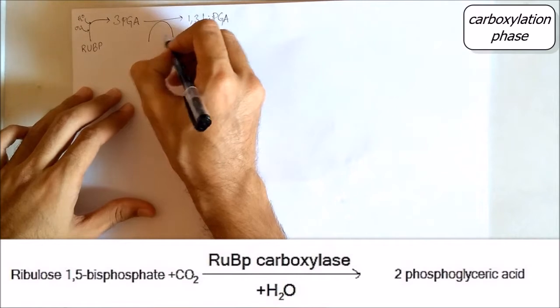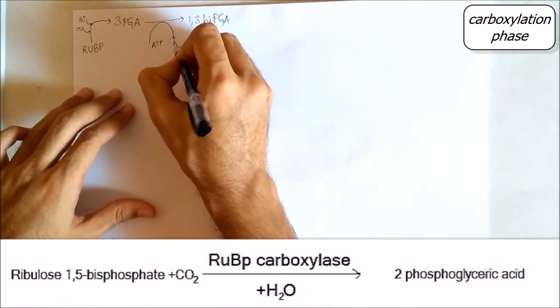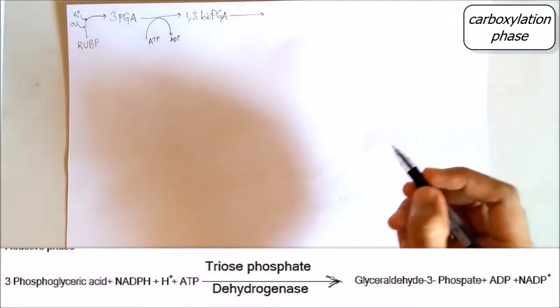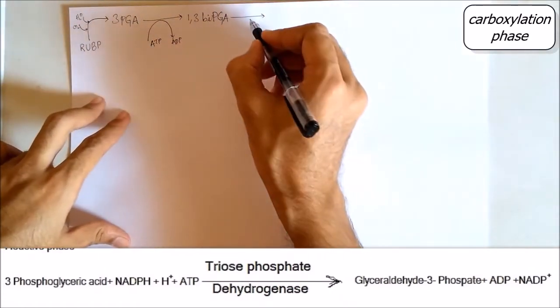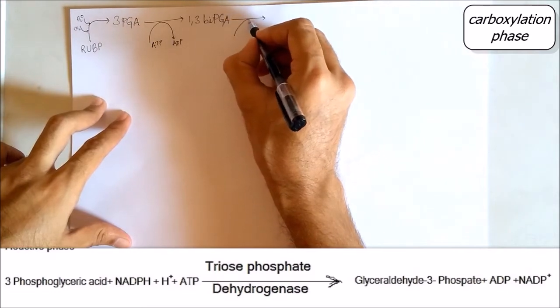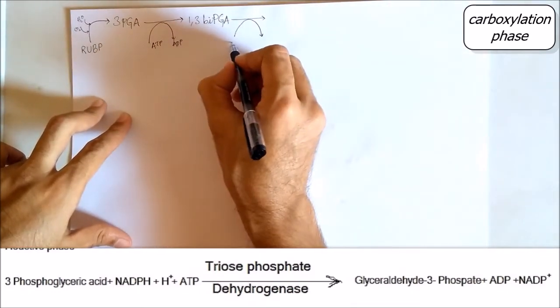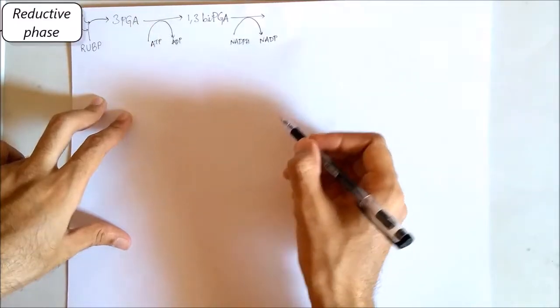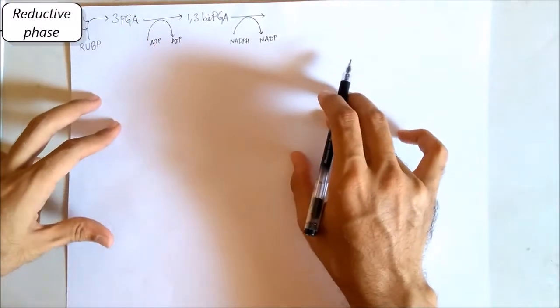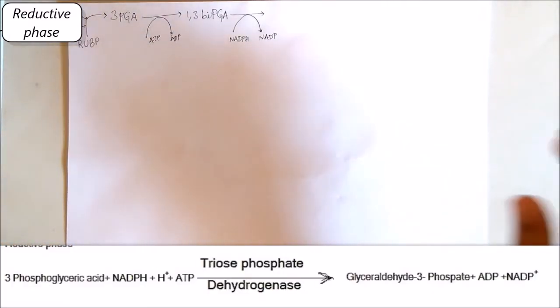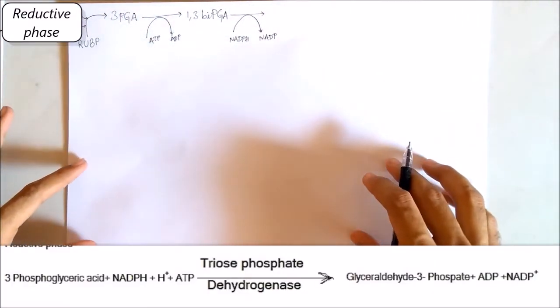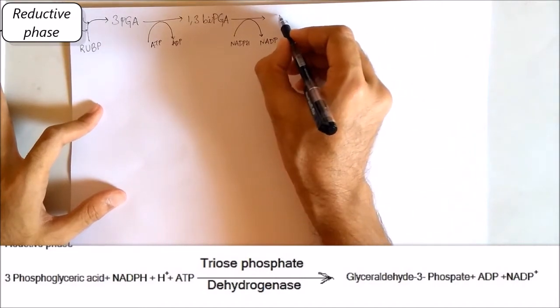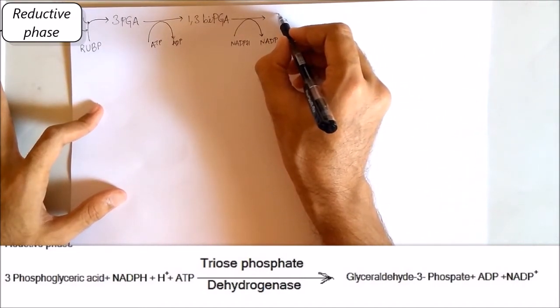By utilizing ATP giving rise to ADP, and then in this cycle it is known as carboxylation phase. Where NADPH giving rise to NADP+, this carboxylation phase is giving reductive phase in which it is reduced and giving 6 glyceraldehyde 3-phosphate.